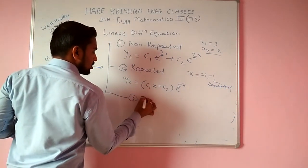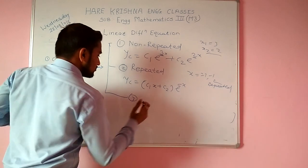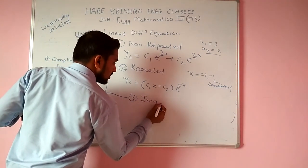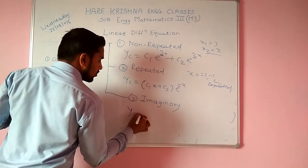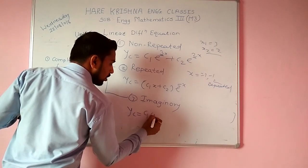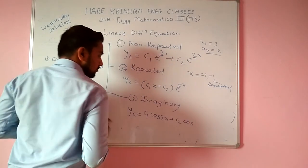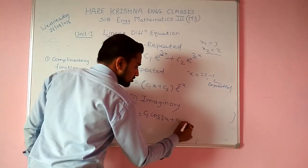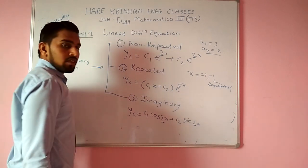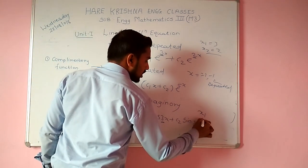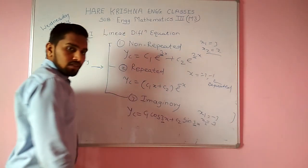Third one is the imaginary method. The solution is: yc = c1·cos(3x) + c2·sin(3x). Here 3 is the beta value. In the imaginary equation we got x1 and x2 equal to ±3i.